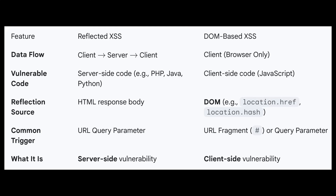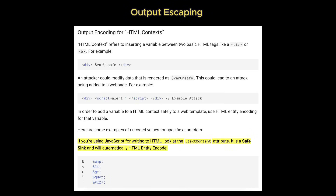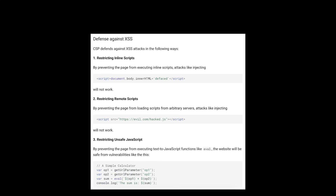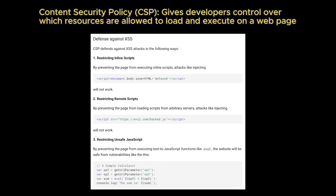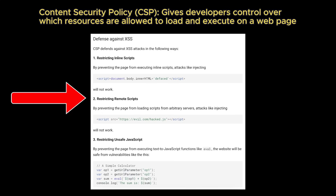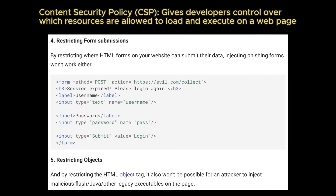Preventing XSS requires a multi-layered approach. The most fundamental defense is output escaping — user input should be properly encoded before being rendered in HTML, JavaScript, or attributes. For example, using textContent instead of innerHTML ensures that input is treated as plain text, not executable code. Input validation can help, though it is not sufficient alone. Content Security Policy, or CSP, provides an additional safeguard by restricting which scripts can execute. Modern web frameworks such as React, Angular, and Vue automatically escape values in templates, greatly reducing the risk of XSS.